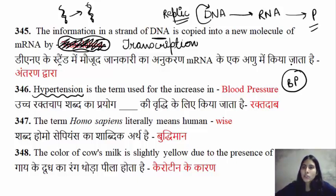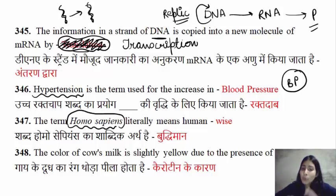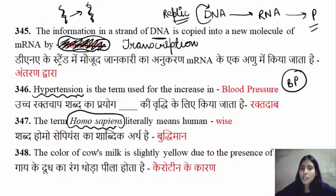The scientific name for human beings under binomial nomenclature is Homo sapiens. Homo sapiens actually means wise — it means wise man.